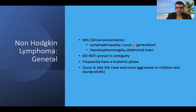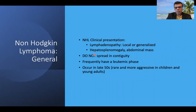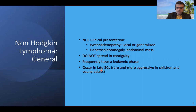In lymphoma in children, NHL is the most common form, and Burkitt's lymphoma is regarded as the most common form of NHL in children. Common clinical presentations that occur in almost all lymphomas include lymphadenopathy, which can be local or generalized. Generalized means two or more groups of lymph nodes are enlarged or involved in a non-contiguous fashion. Apart from that, hepatosplenomegaly and abdominal mass are common clinical features. They frequently have a leukemic phase, and non-Hodgkin's lymphoma majority occur in older age, usually in the late 50s or 60s, and are more aggressive at the extremes of age.